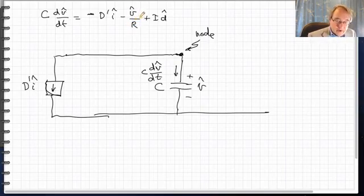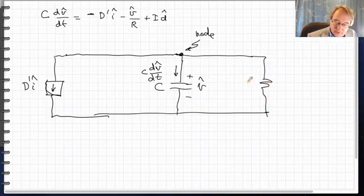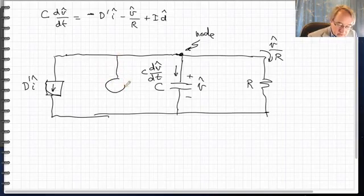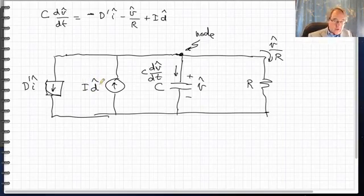The second term is the load current — the AC variation in the load current. We recognize V-hat over R as the current through a resistor of value R having voltage V-hat. Because of the minus sign this also flows out of the node, which is consistent with a resistor. The last term is another D-hat source — a current depending on the control input D-hat — so we draw an independent source. With the plus sign it flows into the node, with value capital I times D-hat. This is the equivalent circuit for the capacitor equation.